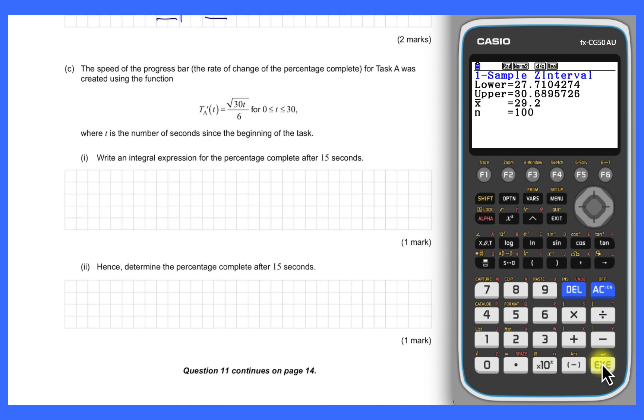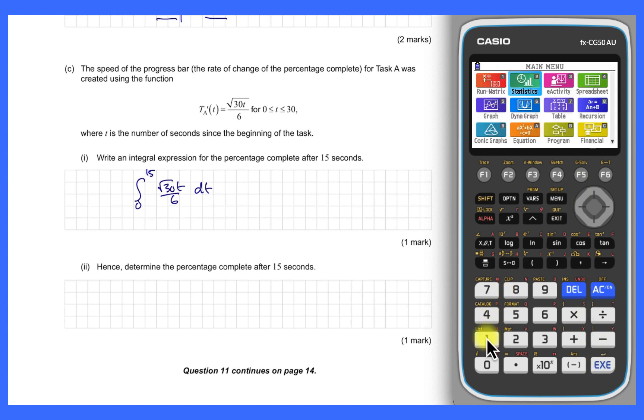Now interestingly, the question pivots to show us some functions that we use to generate these task bars in the sample that was done. Now we're going to do some of the math sitting behind that. First of all, we have a function for the speed of the task bar, the rate of change of that percentage complete. In other words, it's a derivative function, t dashed a of t is the square root of 30t on 6. We want an integral expression for the percentage complete after 15 seconds. So that would be the total change in t from 0 to 15. In other words, it would be the definite integral from 0 to 15 of root 30t on 6 dt.